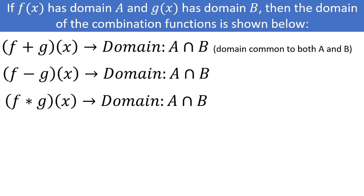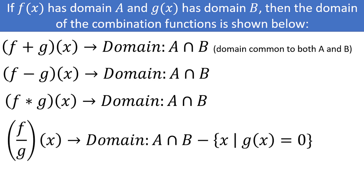If you are dividing functions, you have the additional restriction that the function on the bottom cannot equal zero, so as to avoid the divide-by-zero error. We represent this by saying that the domain is A ∩ B minus any x such that the function in the denominator equals zero.